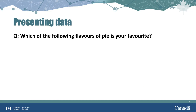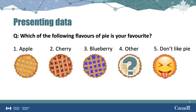For example, think about the following question: what is the most popular kind of pie? If you really wanted to know the most popular type of pie in your hometown, you might decide to conduct a survey. This survey would ask everyone in town what kind of pie is their favorite — apple, cherry, blueberry, some other flavor, and finally an option for people who really just don't like pie at all.